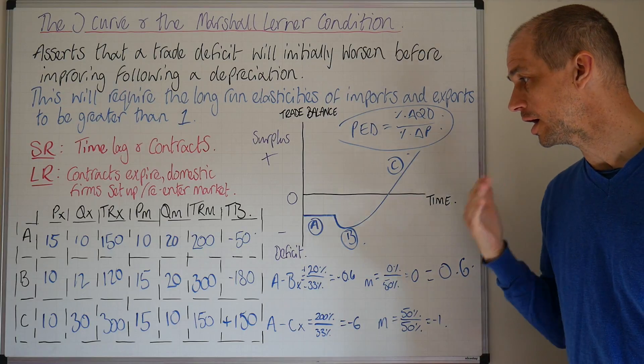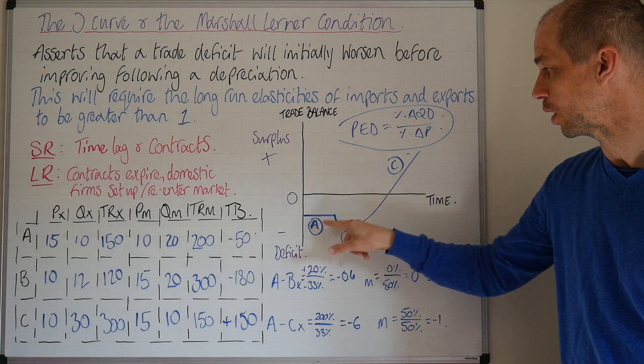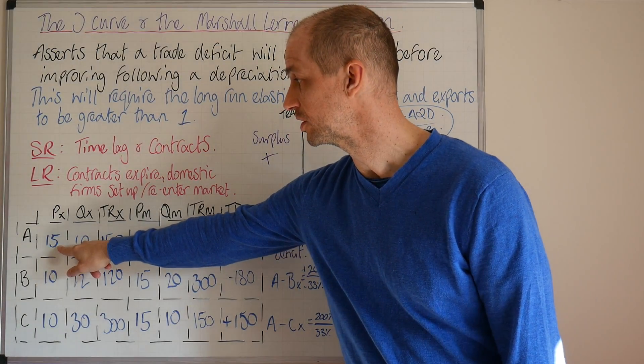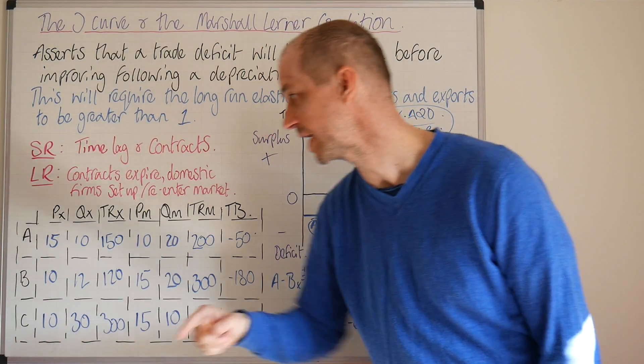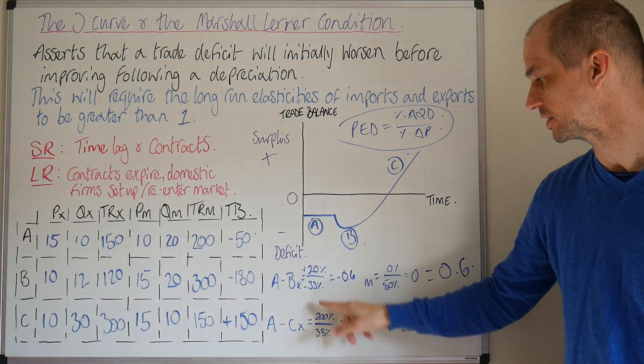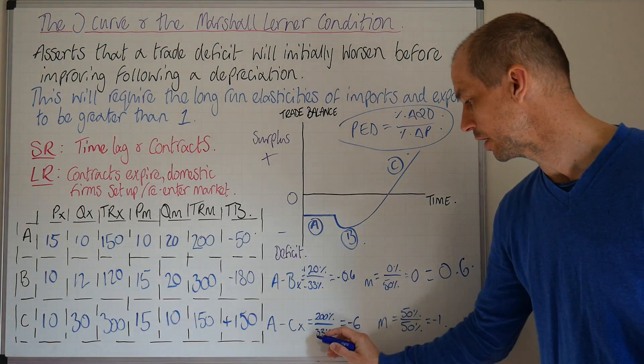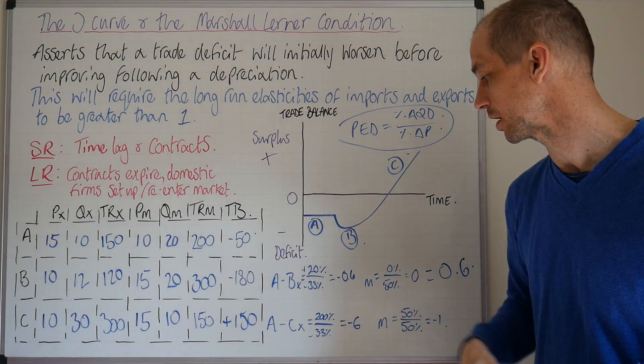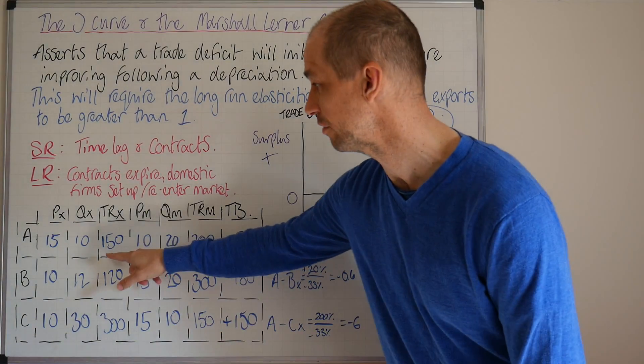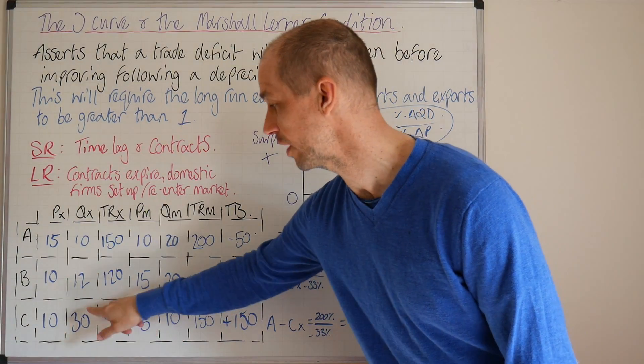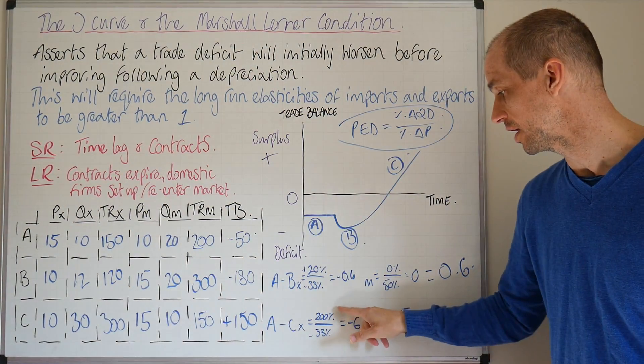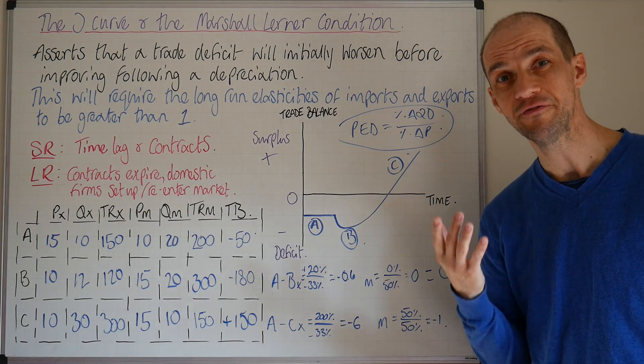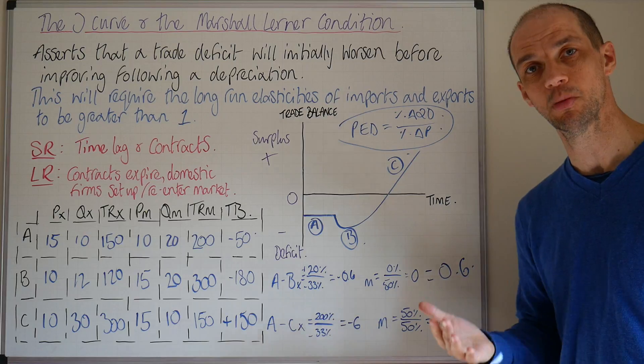Let's now look at our long-run elasticities. We're still working from this price change from 15 down to 10, which gives us that same 33% reduction. Meanwhile, we can see the actual quantities of exports have risen from 10 through to 30—that's a 200% rise. This would equal a very price-sensitive demand for our exports of minus 6. We'll disregard the negative.